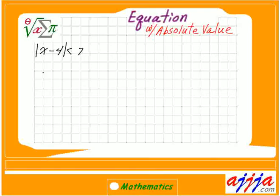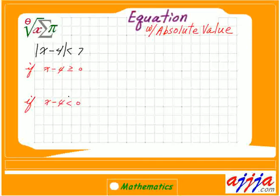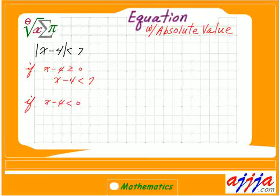Let's try this. There's a variable inside of this absolute value sign. That means we treat this one twice. If x minus 4 is greater or equal to 0, just open it, so x minus 4 is less than 7. Then you move this one to the right hand side, and it's going to be x is less than 11.